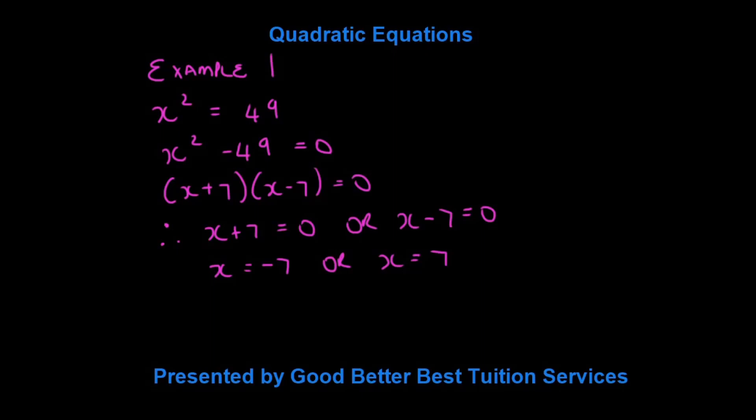So, that gives us x plus 7 times x minus 7 is equal to 0. And what we do now is we can say if the first bracket times the second bracket is equal to 0, we can split the brackets and say the first bracket is equal to 0, and the second bracket is also equal to 0.